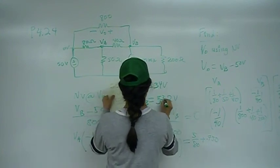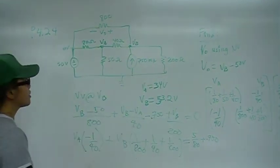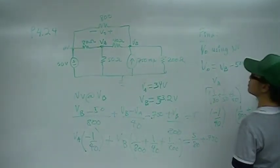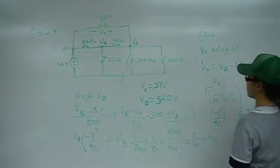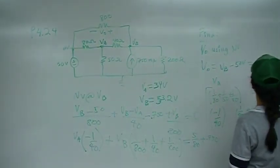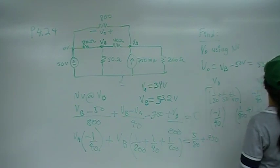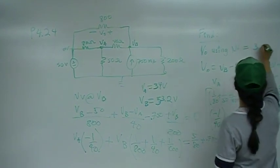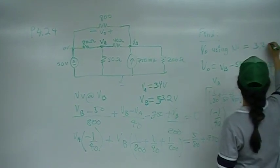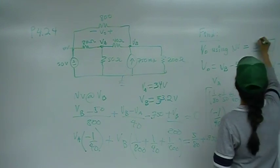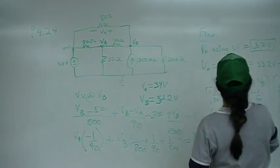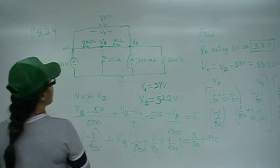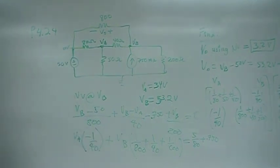So V out is VB minus 50, that's 53.2 volts minus 50, so V out is equal to 3.2 volts. And that is the answer to problem 24.